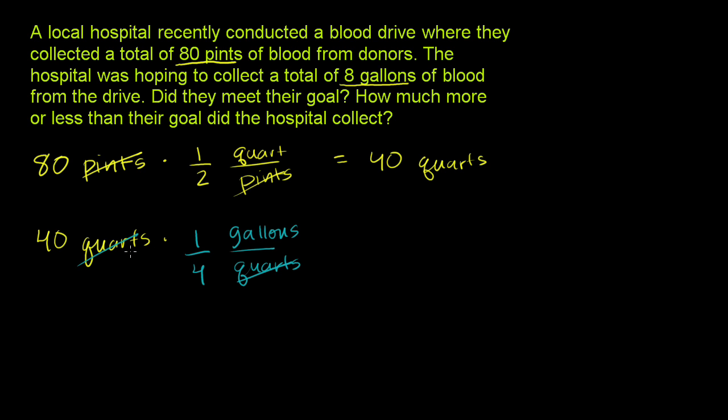40 times 1/4 is the exact same thing as 40 divided by 4, which makes sense since we're going into a larger unit. So 40 times 1/4 is 10, and the units left are gallons. The 80 pints of blood the hospital collected is 10 gallons.